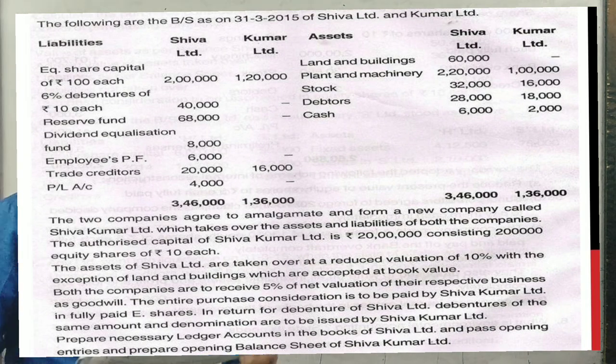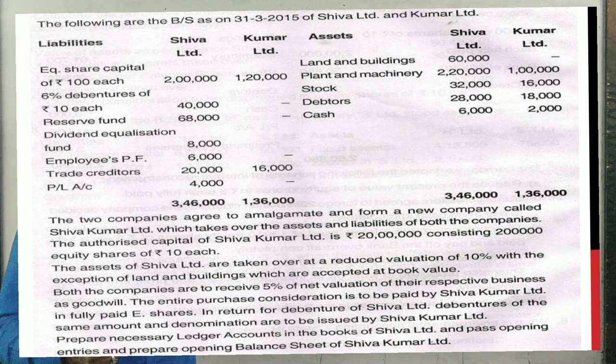2015 ACA question. The following are the balance sheet as on 31st March 2015 of Shiva Limited and Kumar Limited.